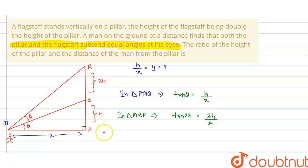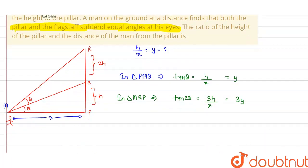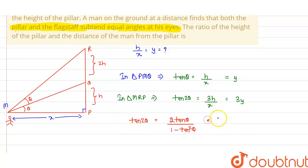Since h upon x equals y, we can write tan θ as y and tan 2θ as 3y. Now applying the double angle formula: tan 2θ equals 2 tan θ upon 1 minus tan² θ. So 3y equals 2y upon 1 minus y².